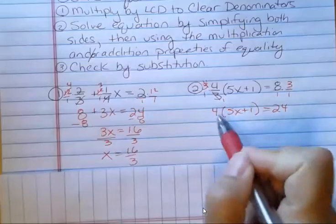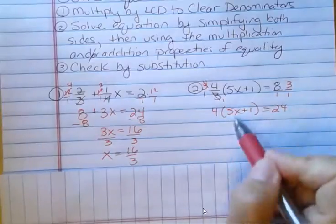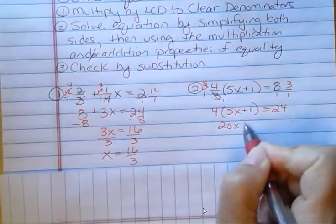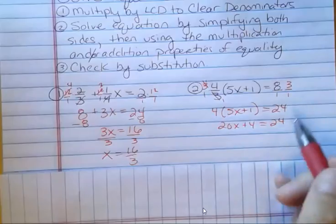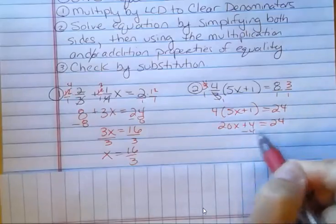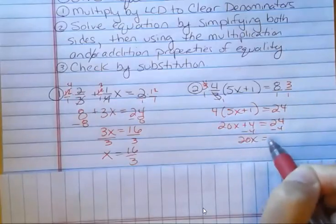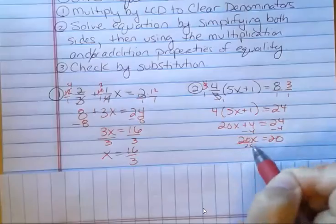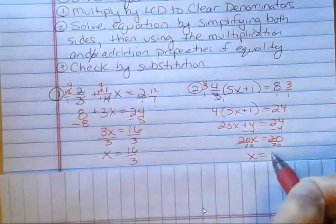Distribute through here. And I'm going to simplify this. I'm going to get 20x plus 4 is 24. I'm going to subtract 4 from both sides and get 20x is 20. And dividing by 20 on both sides, I get x equals 1.